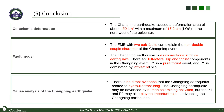In conclusion, the Changlin earthquake caused a deformation area of about 150 square kilometers with a maximum of 17.2 centimeters in the northwest of the epicenter. The fault model with two sub-faults can explain the non-double couple component of the Changlin event. The Changlin earthquake is an oblique directional rupture earthquake with left-lateral slip and thrust components. There is no direct evidence of the Changlin earthquake being related to hydraulic fracturing. The Changlin earthquake may have been advanced by human salt mining activities, but P1 and P2 may also play an important role in triggering the Changlin earthquake.